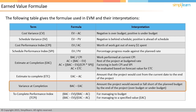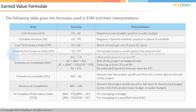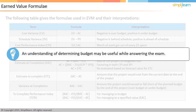Another parameter is the to-complete performance index (TCPI), which is the cost performance needed to achieve a desired outcome. If the project needs to be managed to the original budget (BAC), then TCPI is calculated as (BAC minus EV) divided by (BAC minus AC). If it has to be managed within a revised target (EAC), then TCPI is calculated as (BAC minus EV) divided by (EAC minus AC). Before the PMP exam, make a note of all earned value technique formulas.